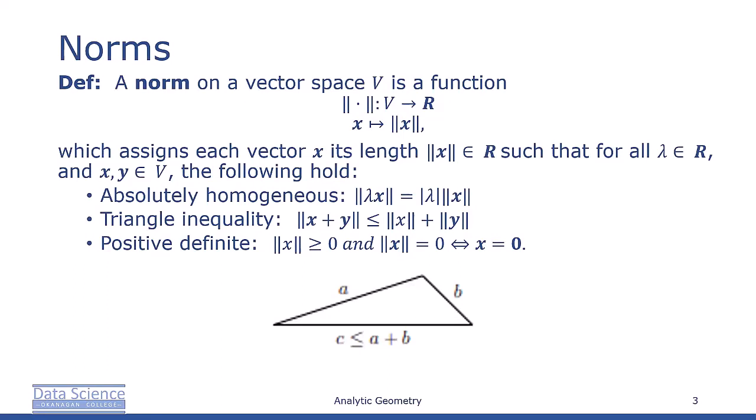When we think of geometric vectors — that is, directed line segments that start at the origin — intuitively the length of a vector is the distance of the end of this directed line segment from the origin. In what follows, we'll discuss the notion of length of vectors using the concept of a norm.